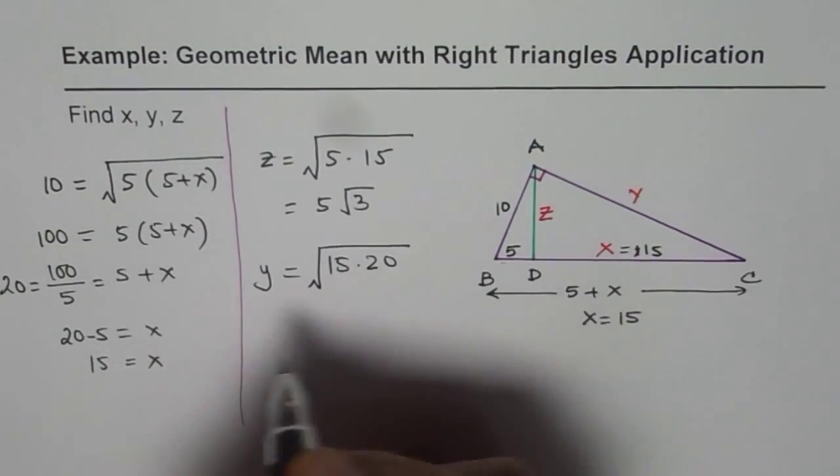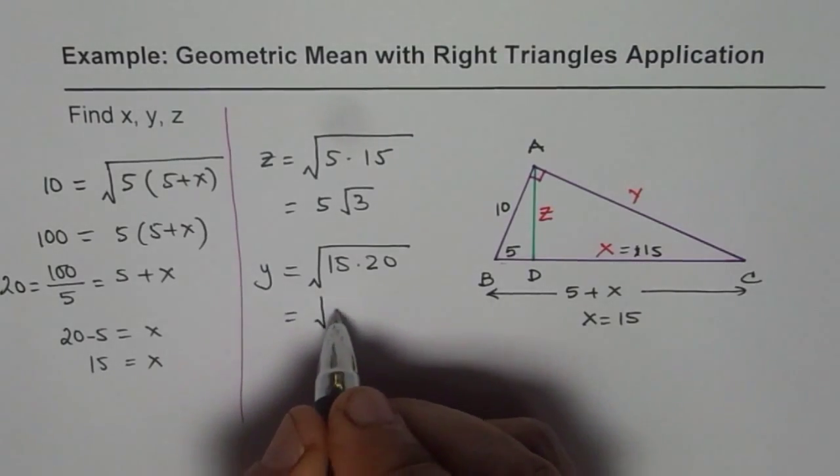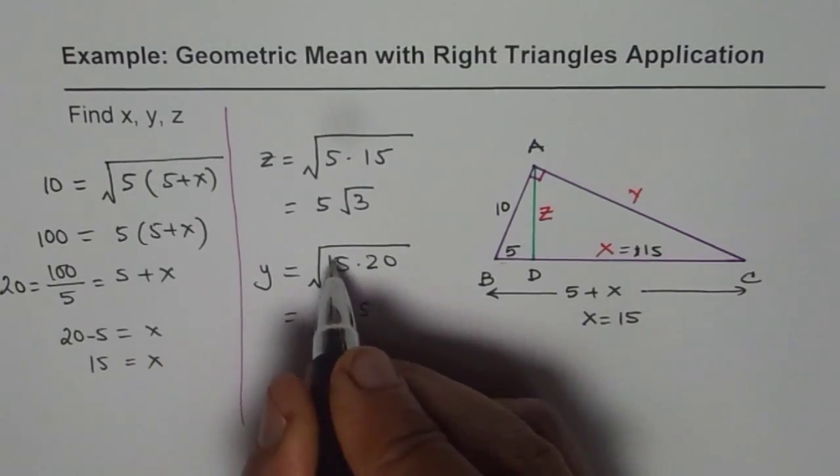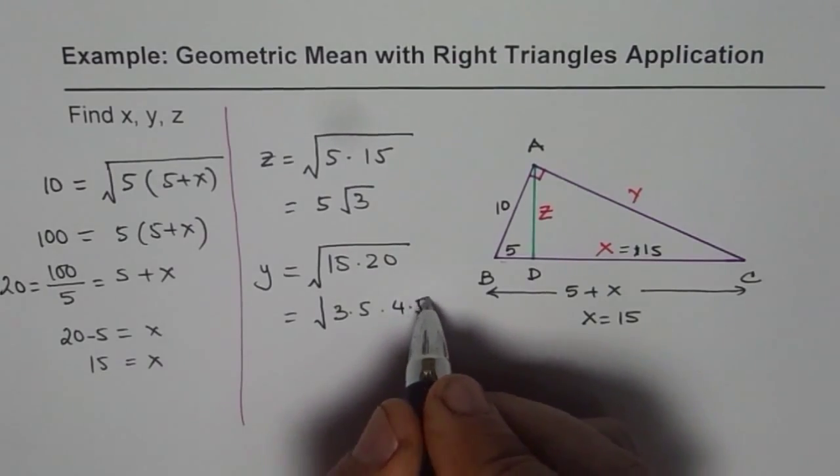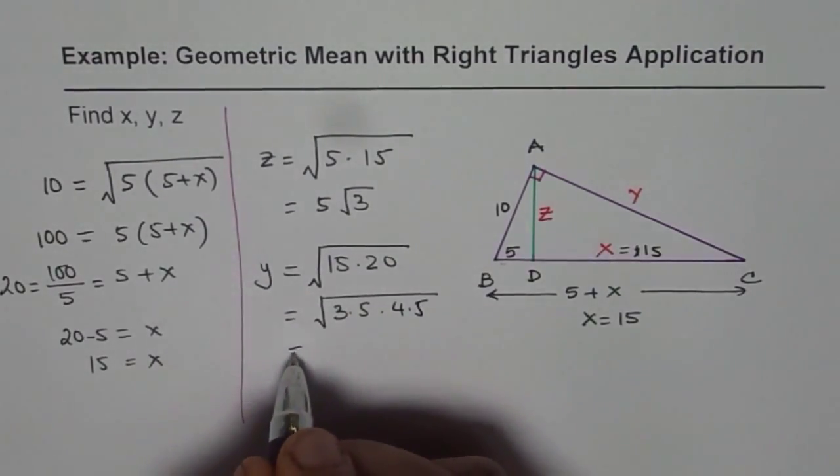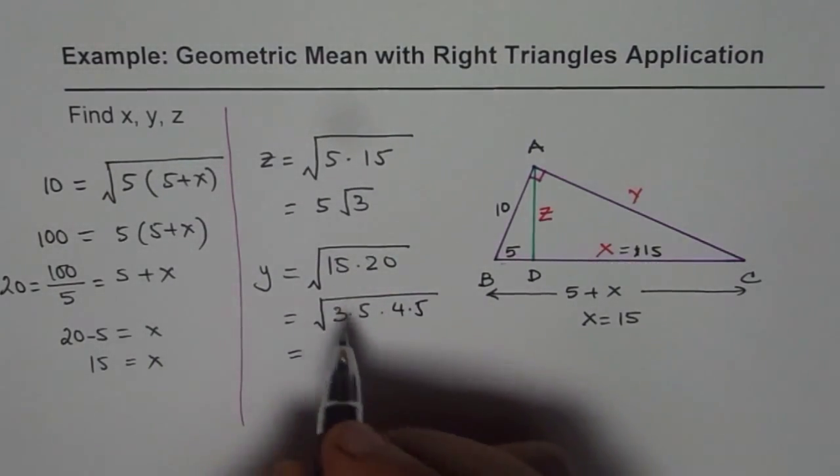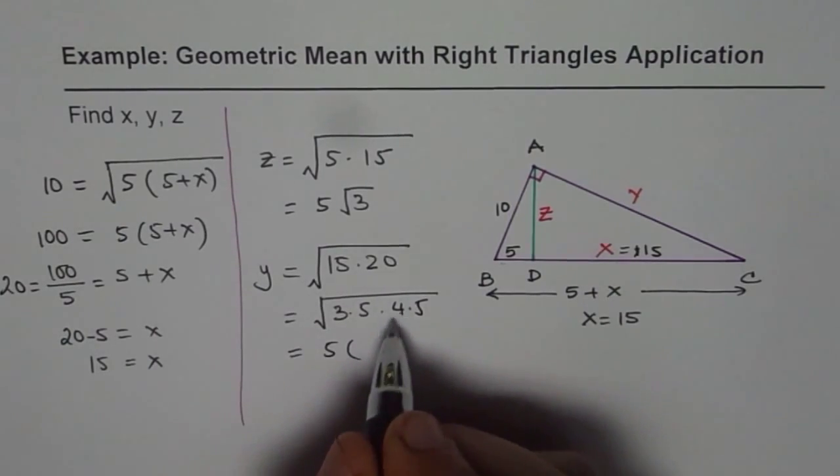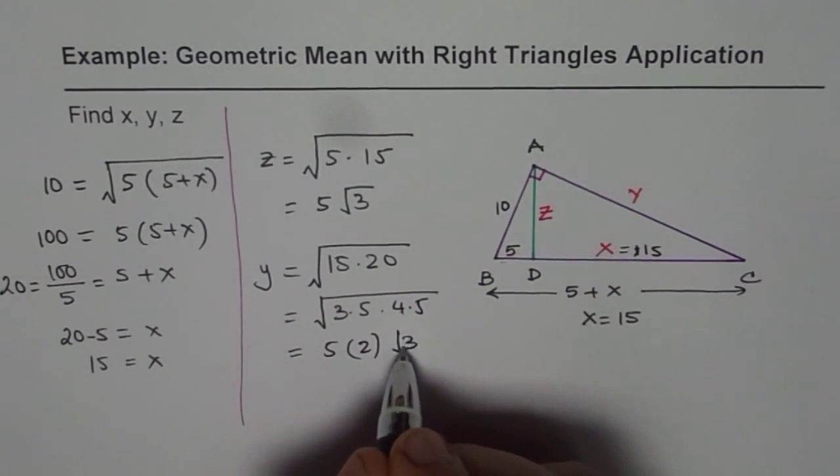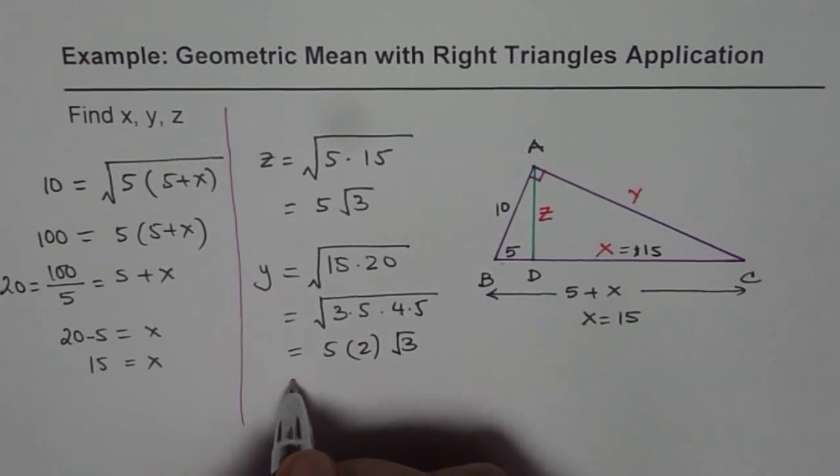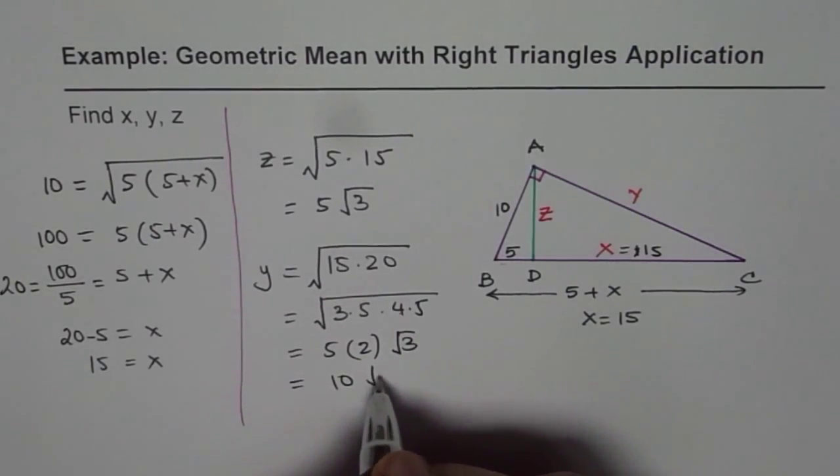20 is 5 times 4. Let me break them up, it's easier. 3 times 5 is 15, and 20 is 4 times 5. So that helps actually. So we have 5 times 2 square root of 3. So that gives us the value equals 10 square root of 3.